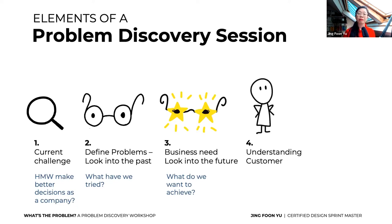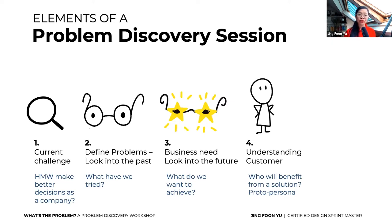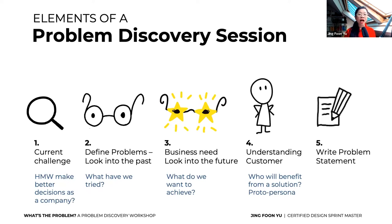Element four: understanding your customer. For whom is the solution? Who benefits? Who doesn't benefit? You create a proto persona — a prototype persona based on assumptions from the group in your session. You'll test that proto persona later to see if it holds true. Element five: with all those elements done, you write a problem statement together.